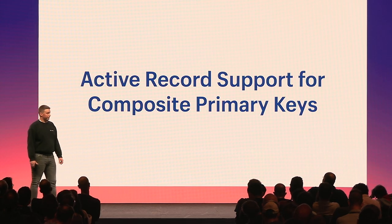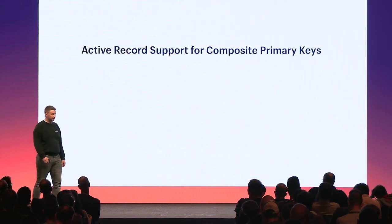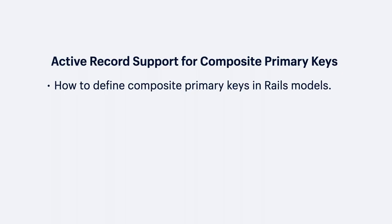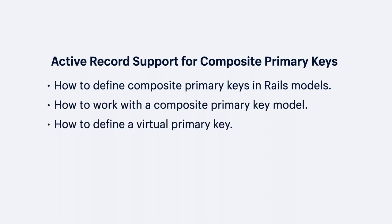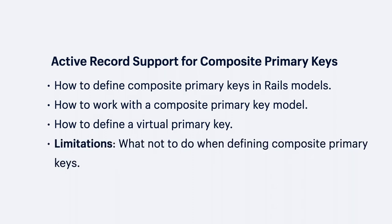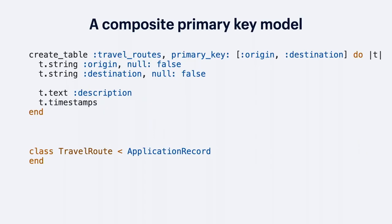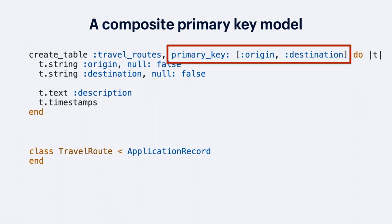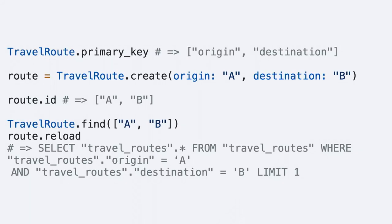Let's overview ActiveRecord support for composite primary keys. This section covers how to define a composite primary key model, how to work with it, how to define a virtual primary key, along with some limitations and what not to do. For our example, imagine a model called TravelRoute, identified by its origin and destination. In our table, two columns will both be part of the primary key, defined using the primary key option in the create table call.